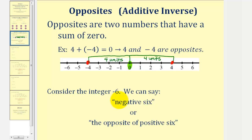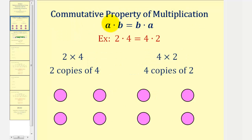Now let's review the commutative property of multiplication. The commutative property of multiplication states that a times b equals b times a. So if we change the order of multiplication, it does not affect the product. For example, we know that two times four equals eight, and so does four times two.